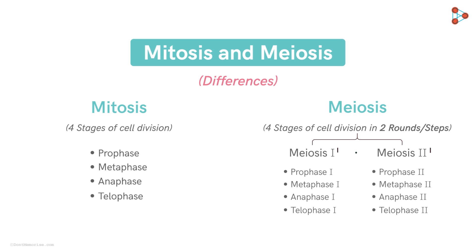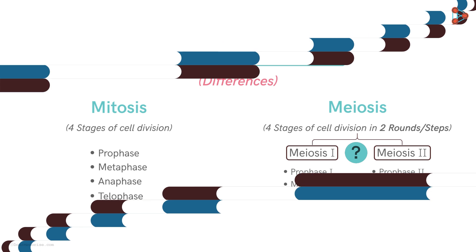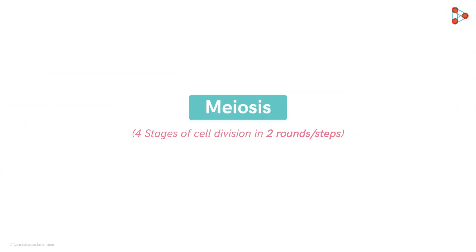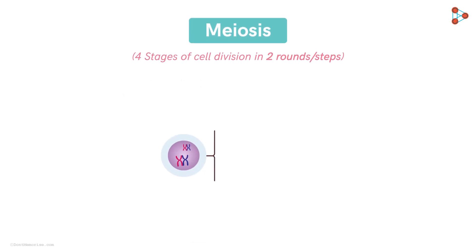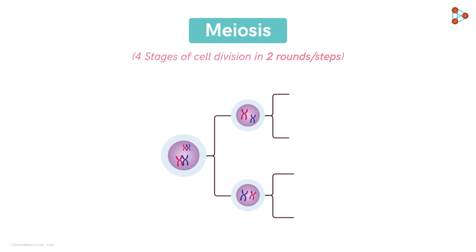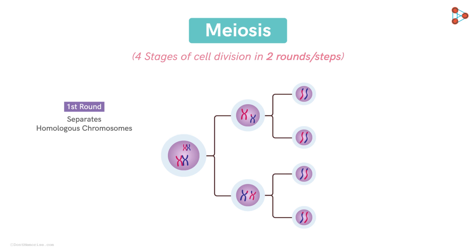But why do cells need two rounds of division? The simple answer is we need four daughter cells each with half the number of chromosomes. The first step gives us two cells, which divide further to give four cells. Technically, the first round separates the homologous chromosomes, while the second round separates the sister chromatids from each other.